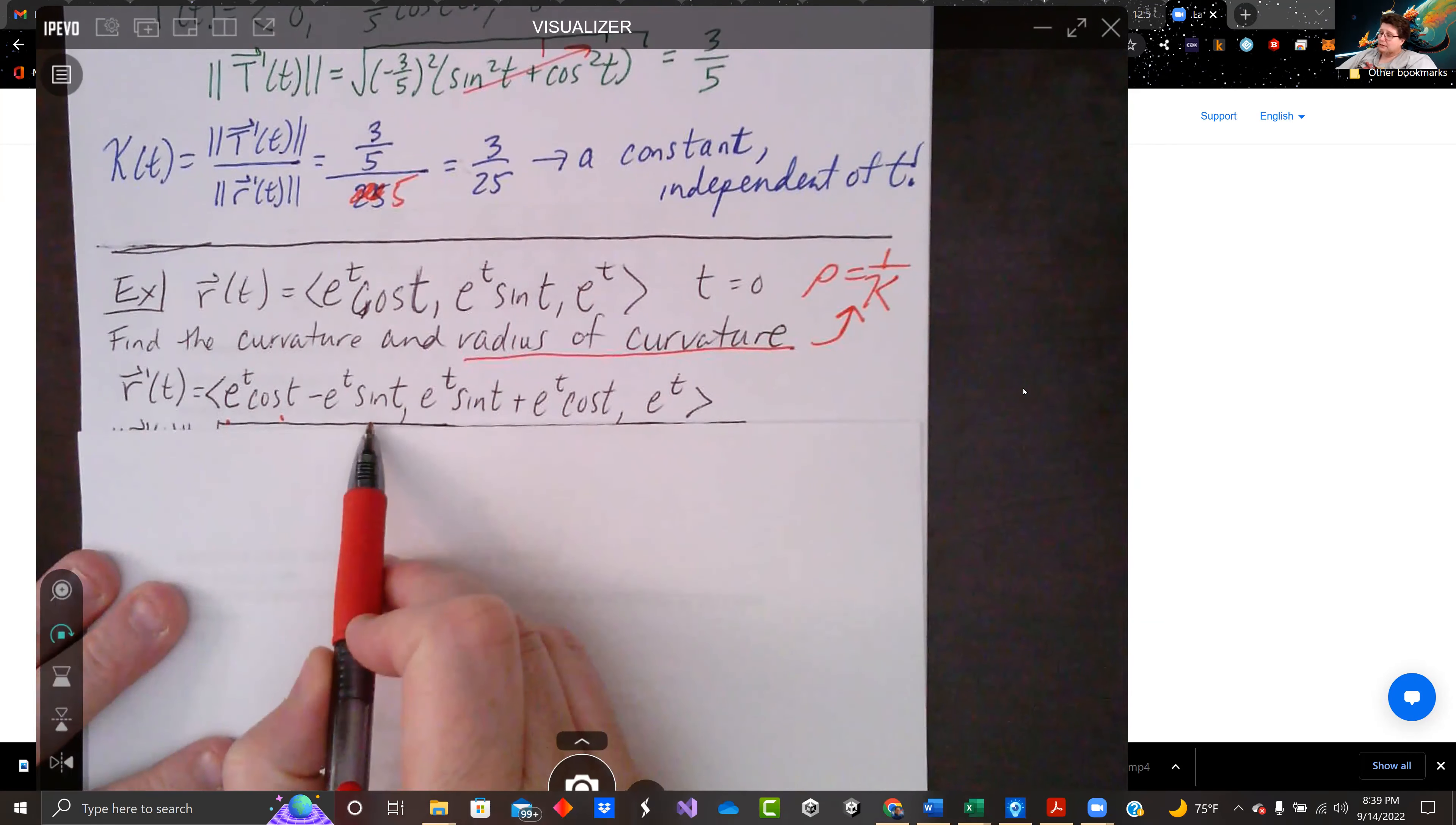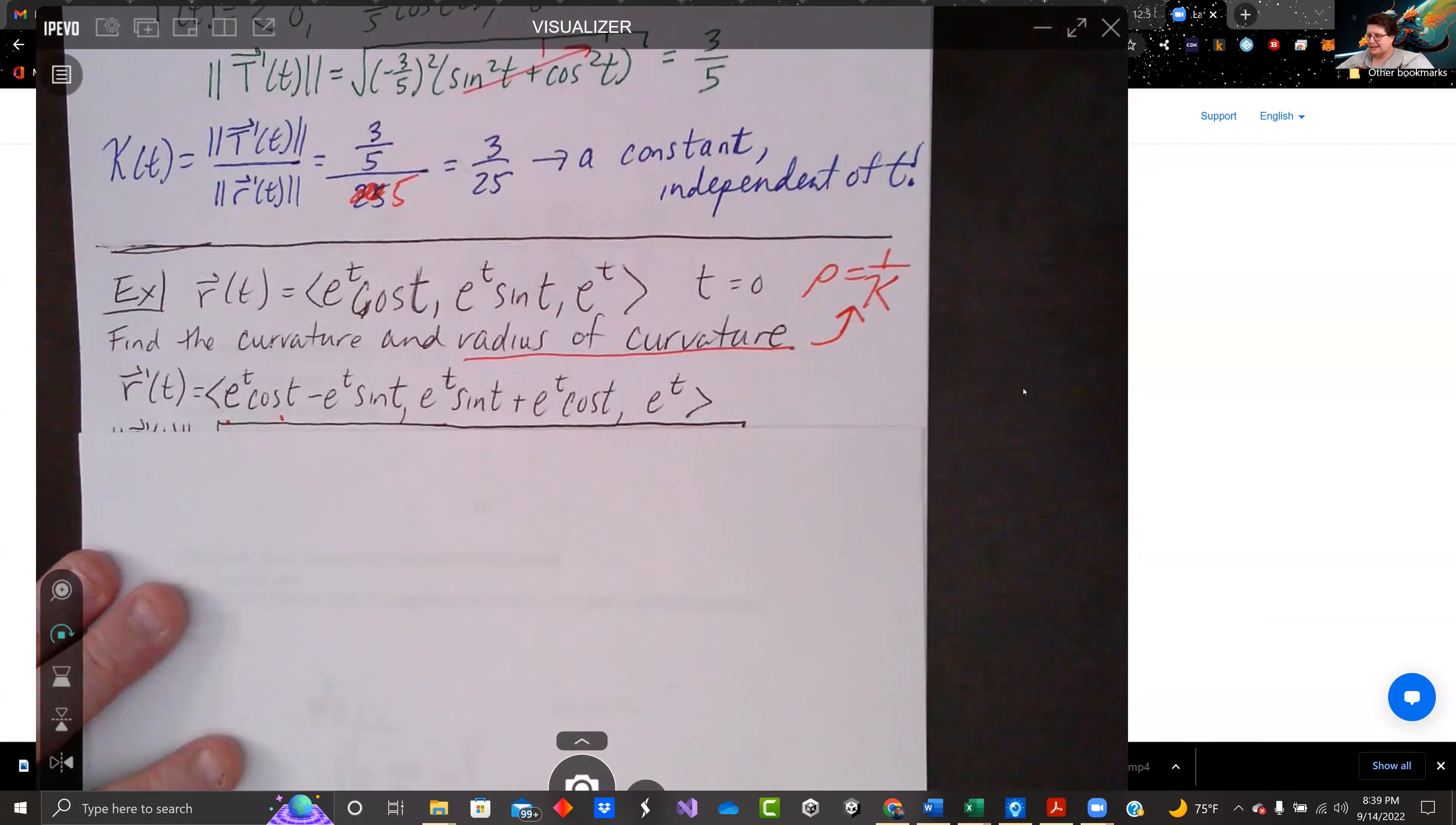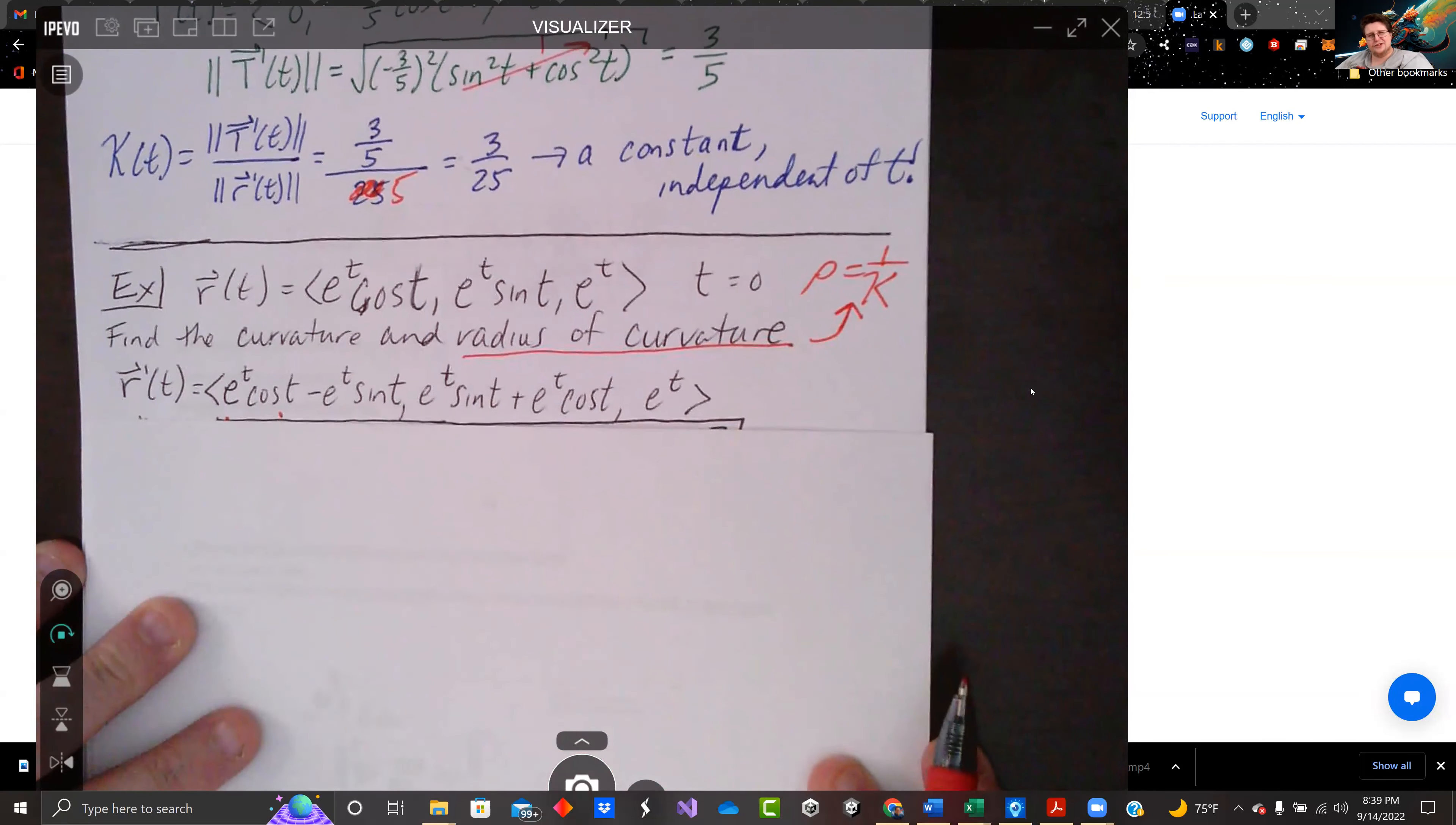The y component looks similar, but sine has a positive derivative of cosine. And the derivative of e to the t is e to the t. Don't we love e to the t? It's consistent. It doesn't change its mind.